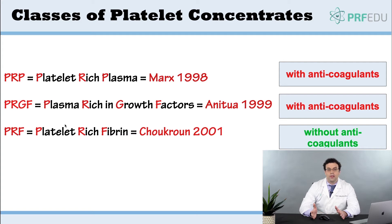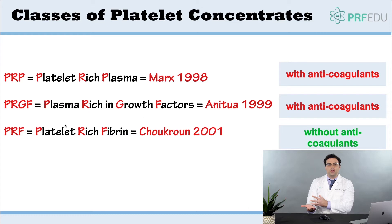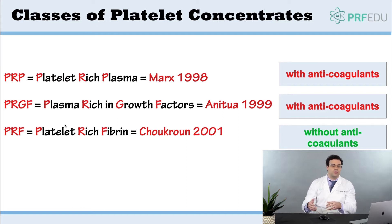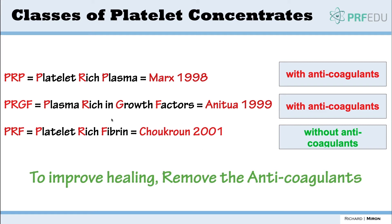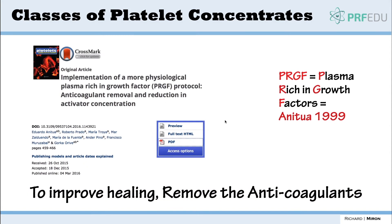If you want to have better healing, clotting is an important step. Simply put, if you cut yourself, one of the first things that occurs is a clot forms — cells and growth factors get trapped in the clot — and thereafter you have healing. Having anticoagulants prevents that clotting step. That was one of the pioneering discoveries from Dr. Choukroon. Even those like Anitua who started with anticoagulants have implemented more physiological approaches with anticoagulant removal and reduction, as seen in his 2015–2016 work.